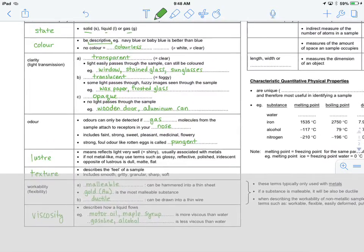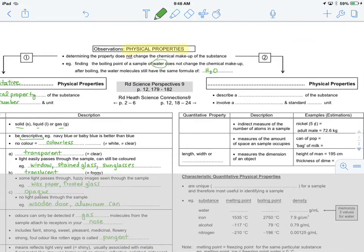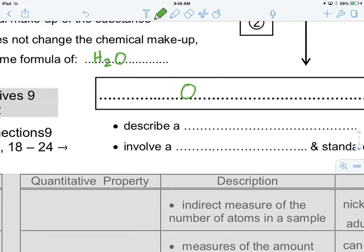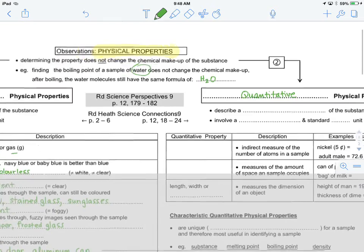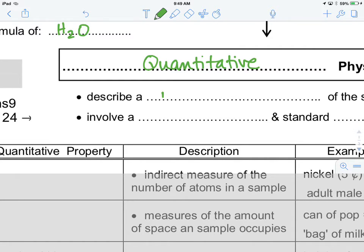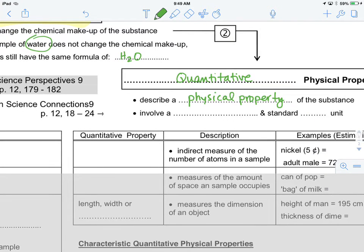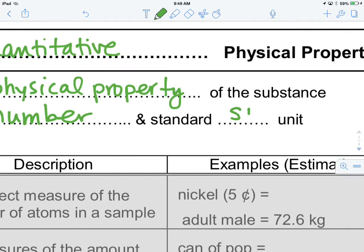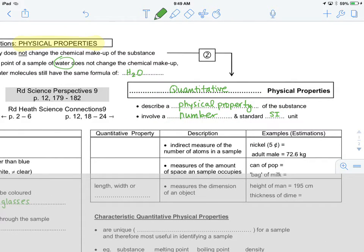You can see them here. We're going to now turn our attention to the other side of this flowchart. The other type of physical property would be a quantitative physical property. And, of course, if qualitative physical properties do not describe and do not use a number, these ones do. Quantitative physical properties, again, describe a physical property of the substance and they involve a number and a standard SI unit.